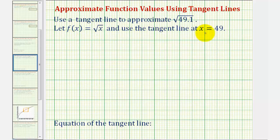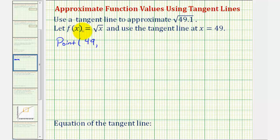To find the equation of the tangent line, we need the point of tangency and the slope. We know x = 49, so that's the x-coordinate. Since the point of tangency lies on the square root function, we evaluate f(49) = √49 = 7. So the point of tangency is (49, 7).